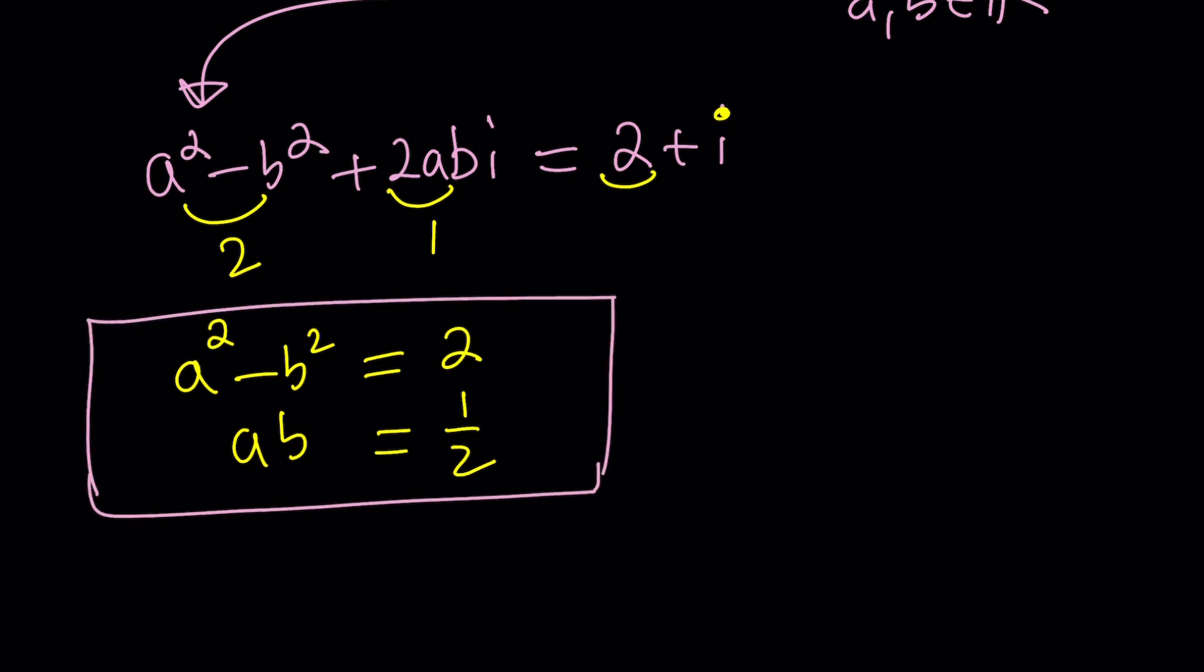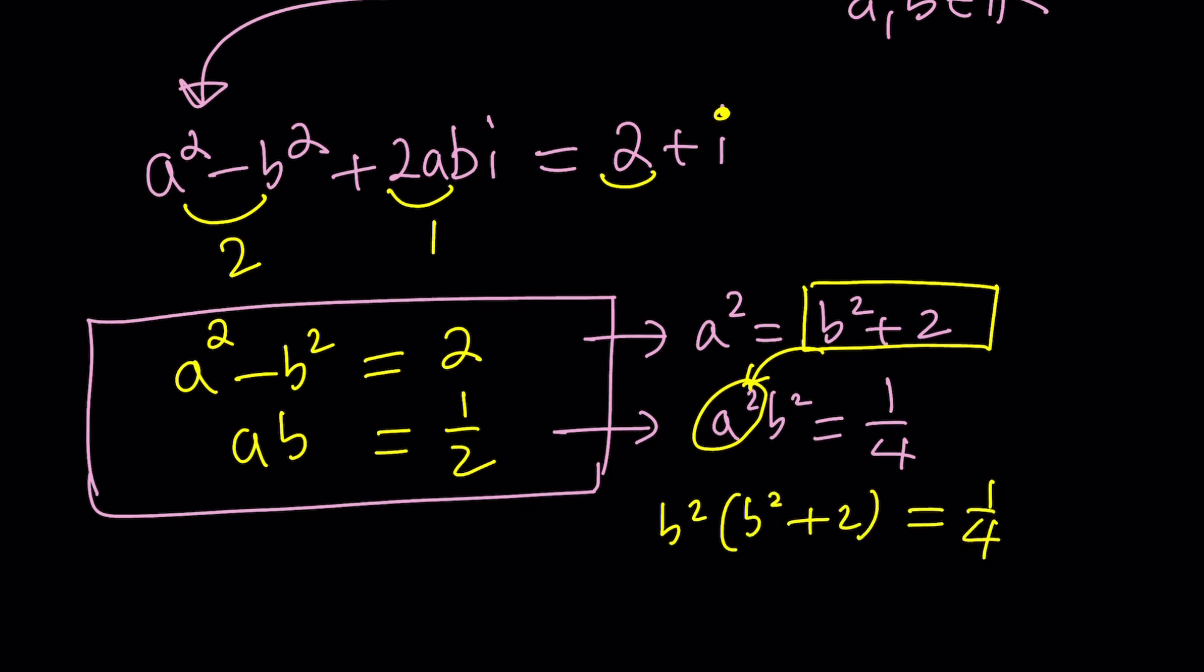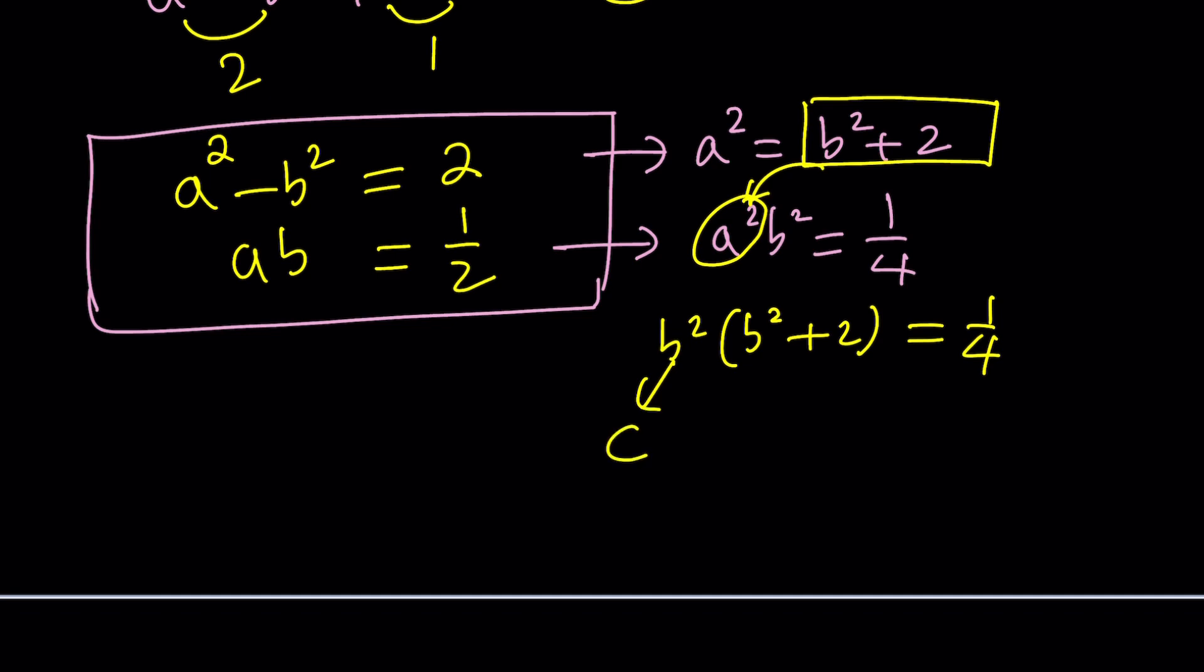So this gives us the following system: A squared minus B squared equals 2 and AB equals 1 half. How nice. We love solving systems, right? Now this system is actually fairly easy to solve. One method is you can square AB and you'll get A squared B squared equals 1 fourth. And then from the first equation, you can isolate A squared and write it as B squared plus 2, and then replace the A squared in the second equation with this. You'll get a quadratic. That's a lot of work, isn't it? You can do it that way, definitely. But I got a better idea.